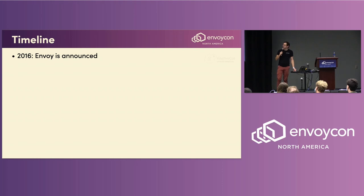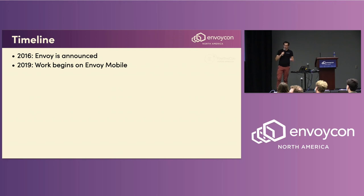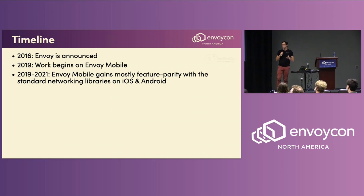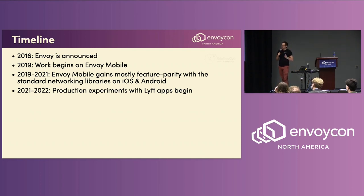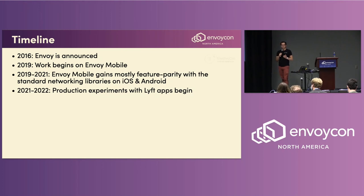A brief timeline: Envoy was announced to the world in 2016. Three years later, folks at Lyft started working on bringing it to a mobile context. For two years after that, a lot of work was done to bring it up to compatibility with the existing well-established, well-polished networking engines already in the industry.